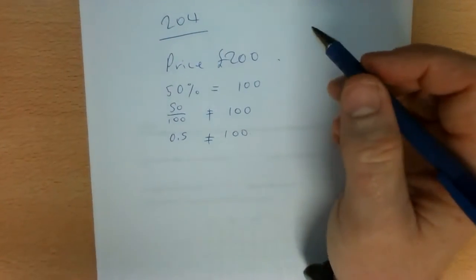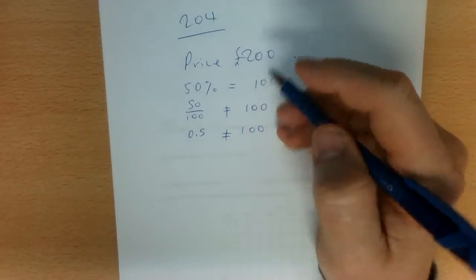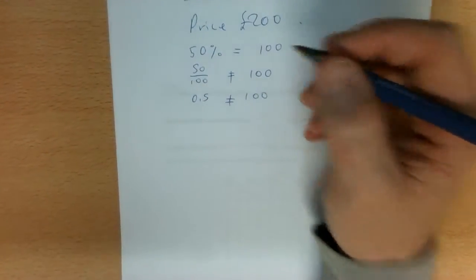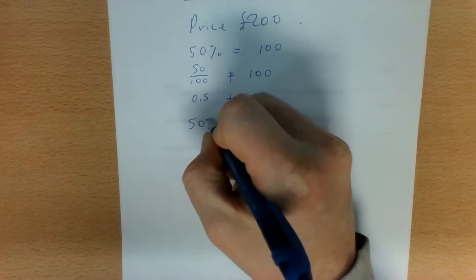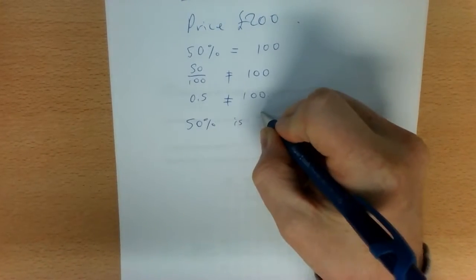So that you can still save time but not use the equal sign where it doesn't apply, I recommend that you just use the word 'is'. So you say 50% is 100 pounds or whatever.